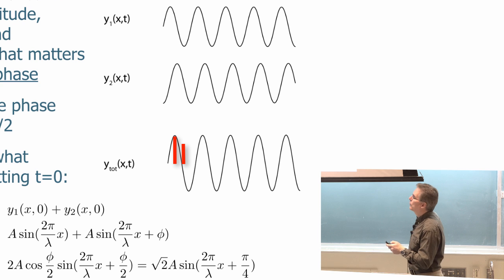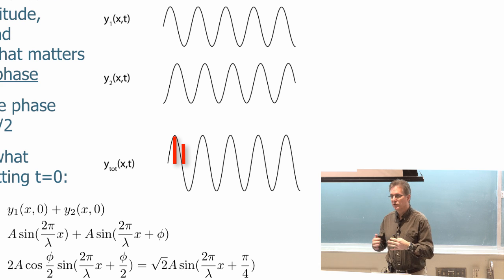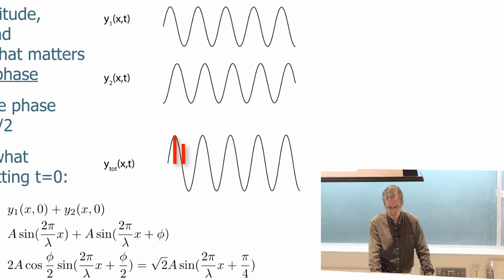Square root of two is around one point four. That means the amplitude of this total wave is forty percent greater than the amplitude of the two waves that added. And of course you could get other values, we just chose this particular phase shift, but that particular phase shift of forty five degrees corresponds to an increase in the amplitude by a factor of square root of two or forty one percent.